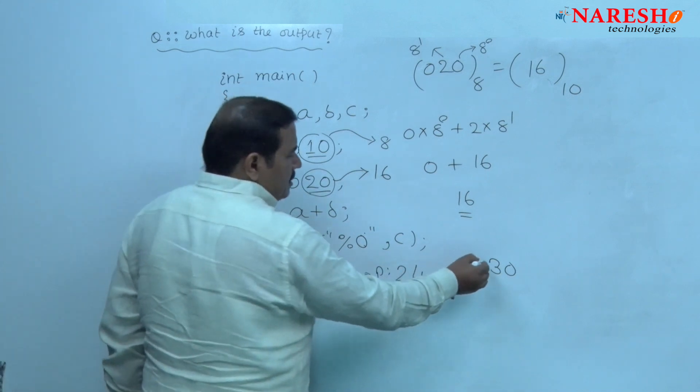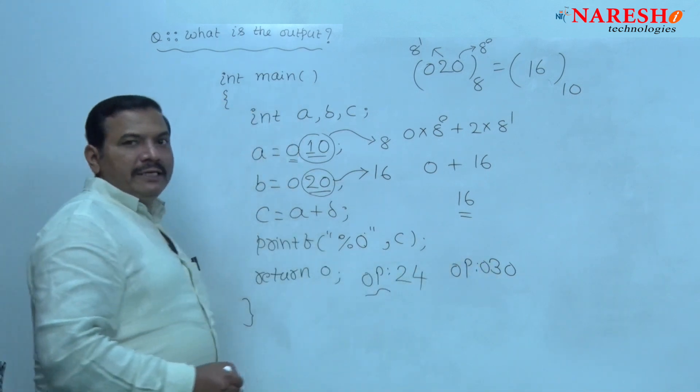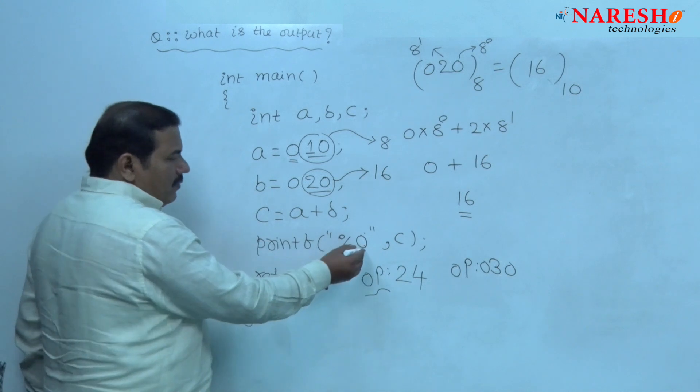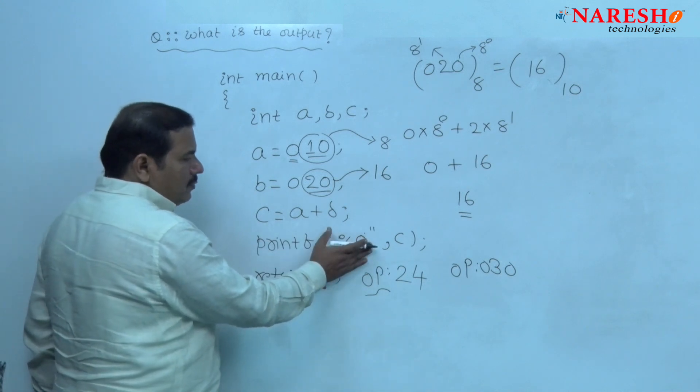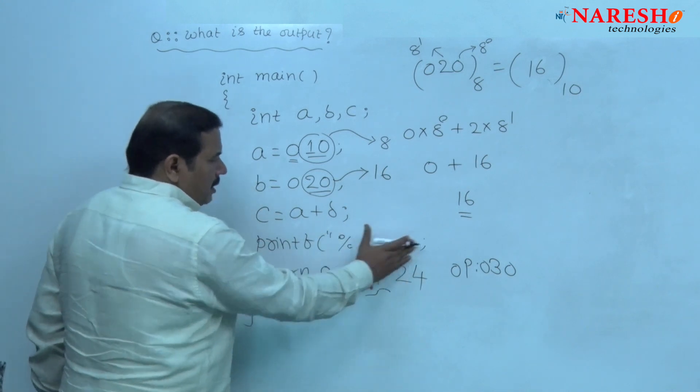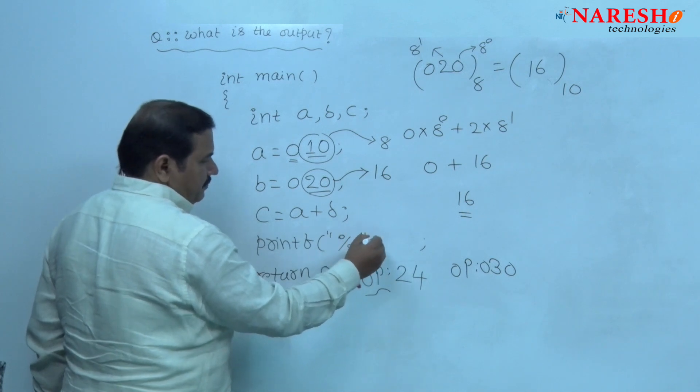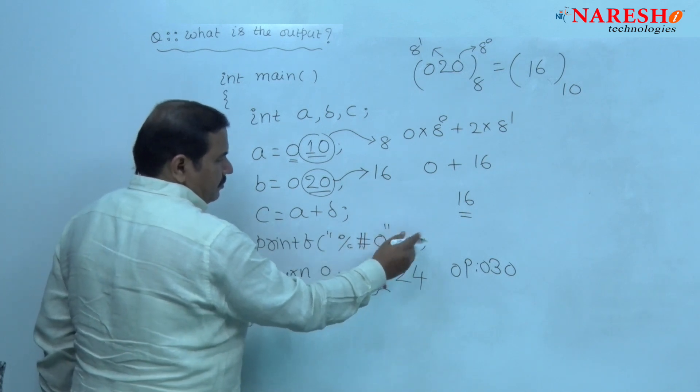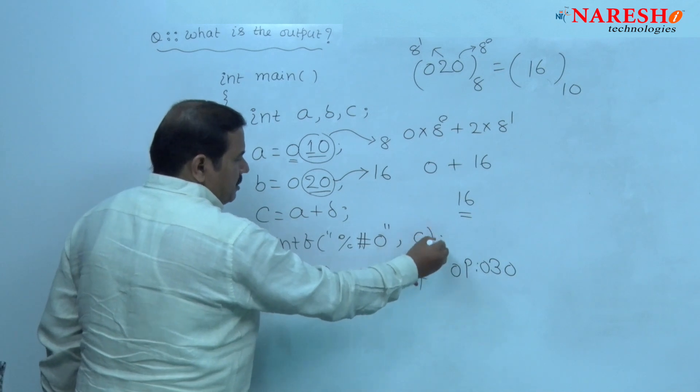In the result, if you want to see 0 in front of 30, along with this format code O, we should use a flag called hash. Hash O.